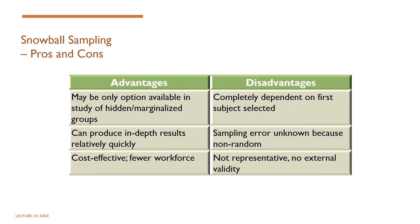Clearly, if rapport cannot be established with these first few respondents, this method will not work. Although snowball sampling would hardly lead to representative samples, there are times when it may be the best method available. Snowball sampling is especially useful when you are trying to reach populations that are inaccessible or hard to find. For instance, if you are studying the homeless, you are not likely to be able to find a good list of homeless people within a specific geographical area. However, if you go into areas frequented by the homeless and identify one or two of them, you may find that they know very well who the other homeless people are in their vicinity and how you can find them. The homeless represent a relatively easy target, however. Those socially stigmatized may not be that easy to find.